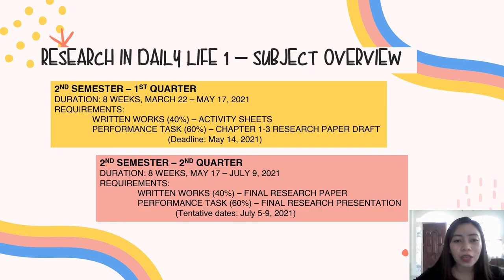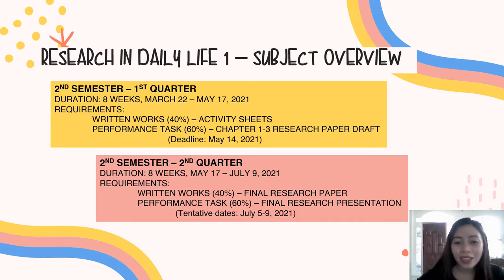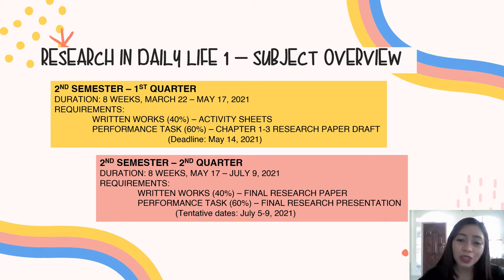For the second quarter of the second semester, that would also be 8 weeks starting from May 17 to July 9, 2021. Written works again comprises 40% of your grade, and that would be your final research paper. The performance task will be 60%, and that would be the final research presentation. At the end of the semester, you'll be required to present your researches individually. Tentative dates for the research presentation will be from July 5 to 9.